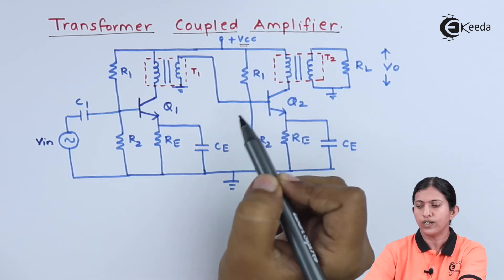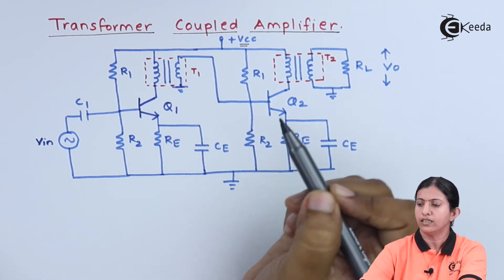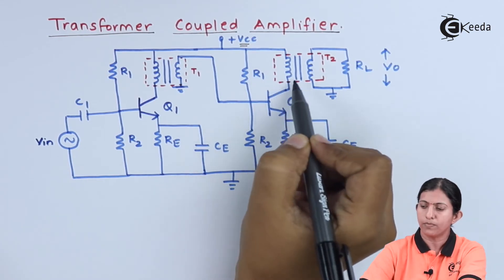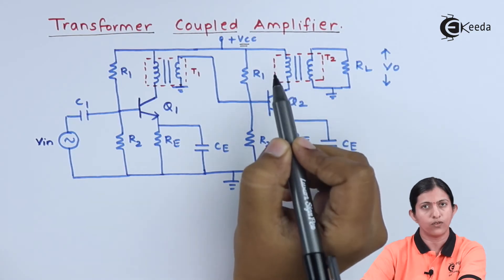The second stage provides further amplification, and the output is available across the primary winding of transformer T2.